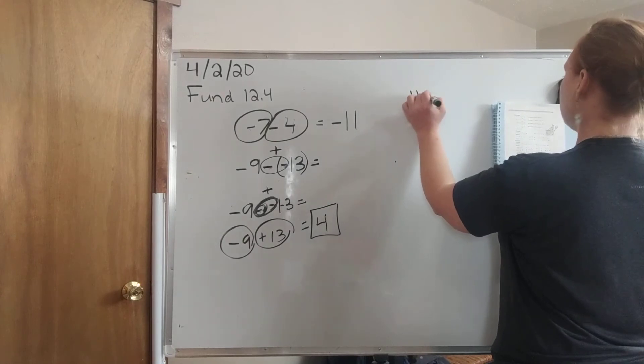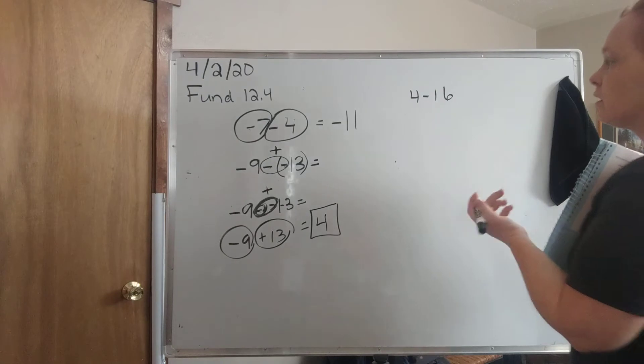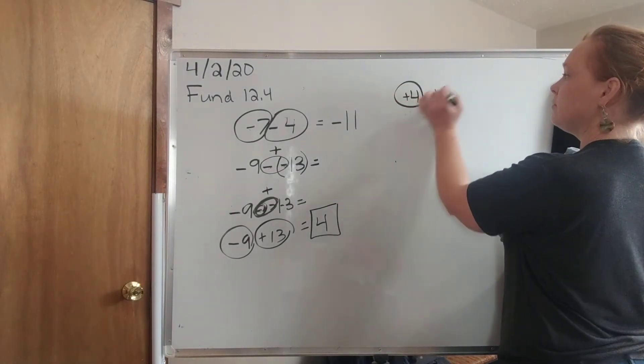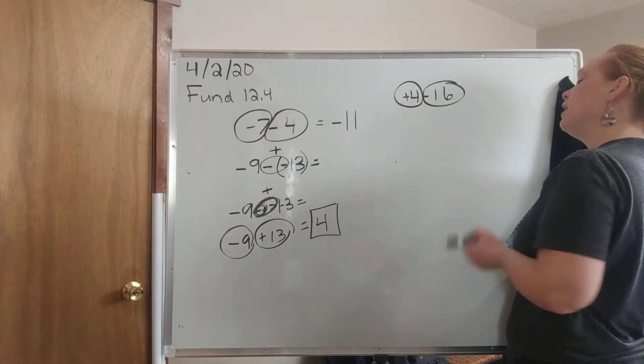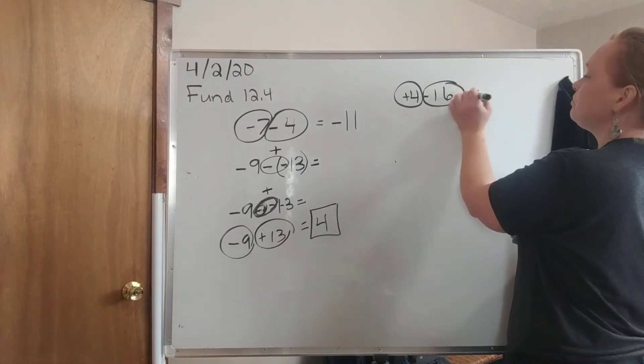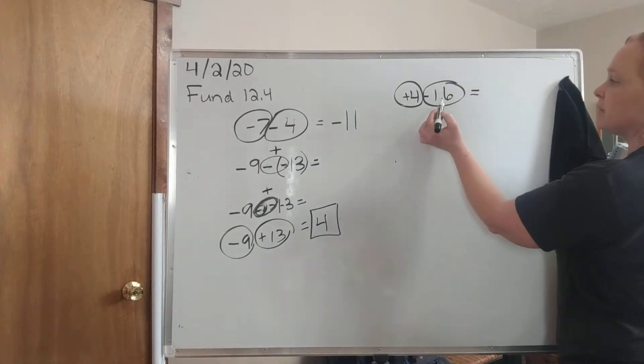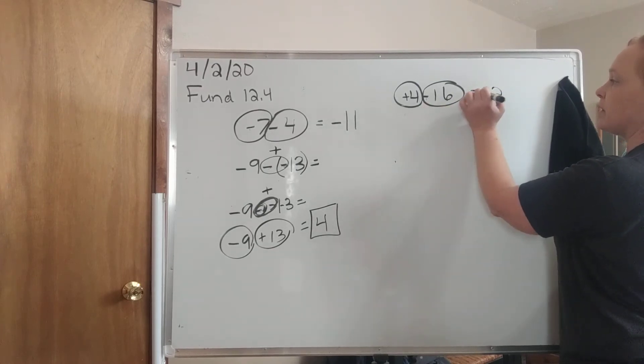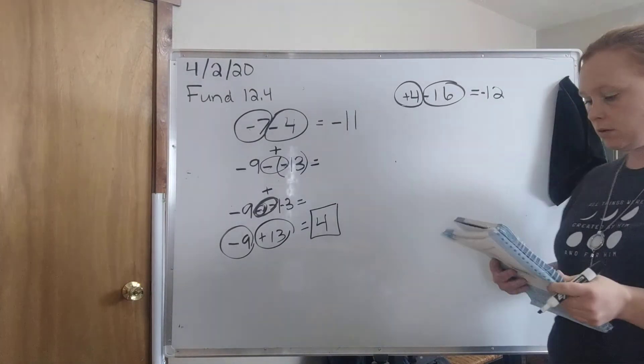So 4 minus 16. In this case, we're subtracting, but I can just put a positive because I know that 4 is positive. And I can combine the two numbers. I'm combining a positive 4 and a negative 16. So my signs are different. So I'm going to subtract. I'm going to say 16 minus 4 is 12. And then I'm going to keep the sign of the bigger number. There you go. Negative 12.